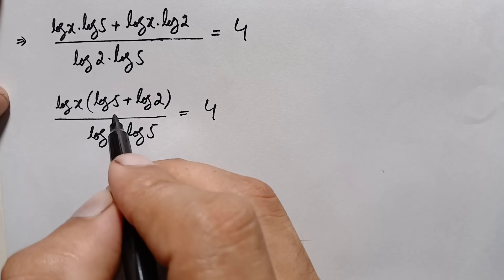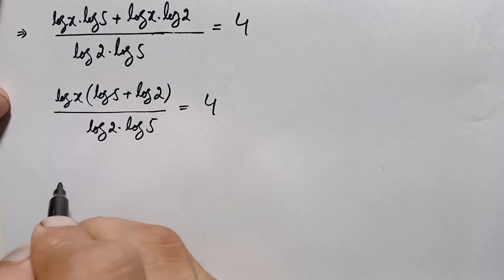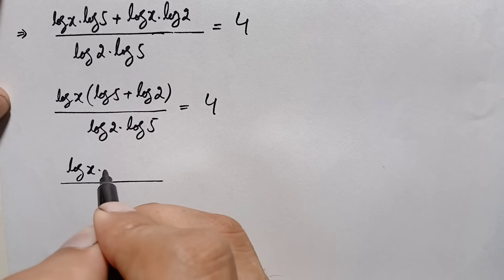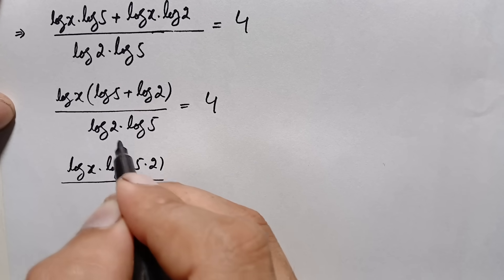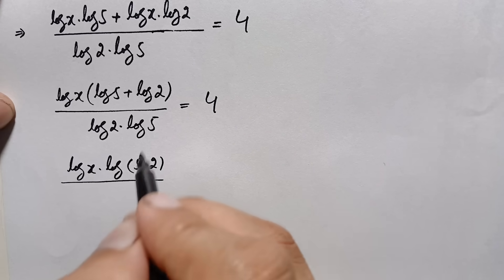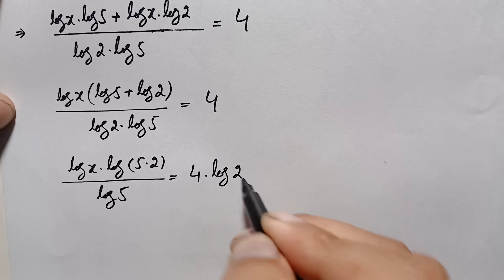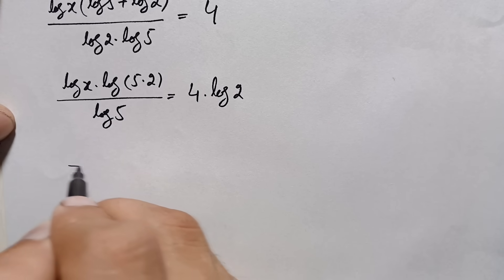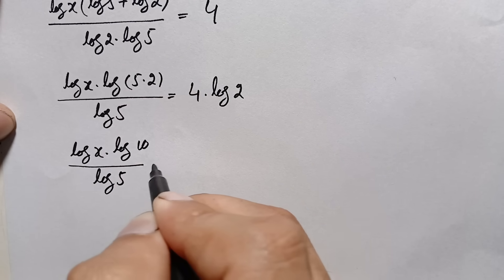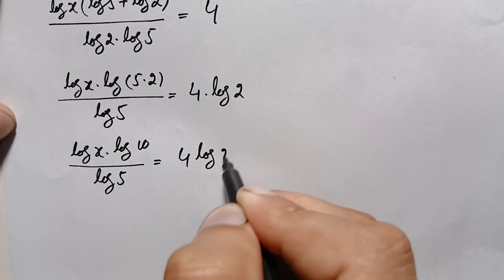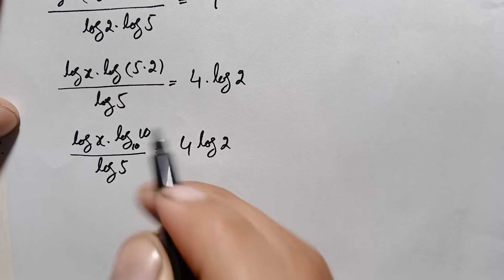In the numerator, we will use another logarithm identity: log of 5 plus log of 2 equals log of 5 times 2, which is log of 10. Moving log of 2 times log of 5 to the right hand side gives: log of x times log of 10 divided by log of 5 is equal to 4 times log of 2. Since log of 10 with base 10 is always equal to 1, we replace this with 1.